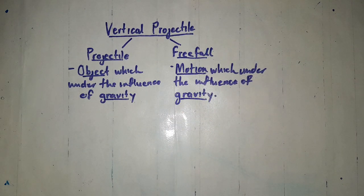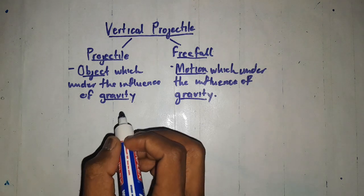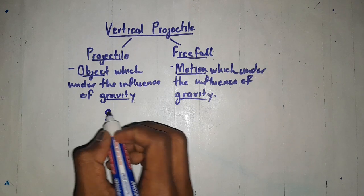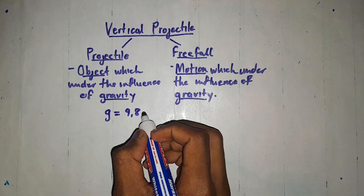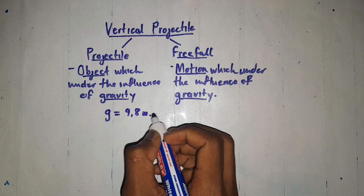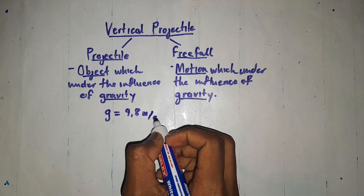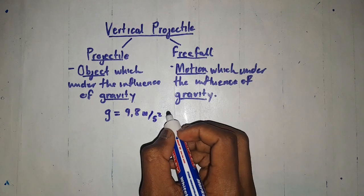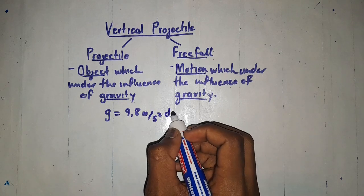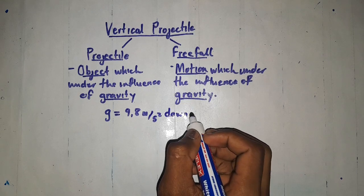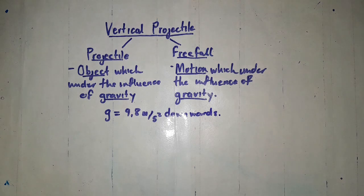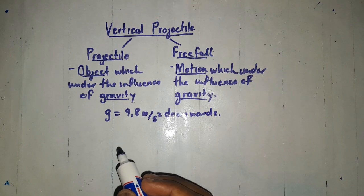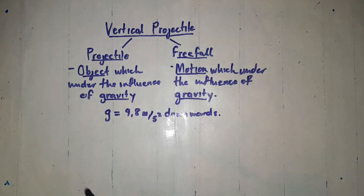Bear in mind that the gravitational acceleration is always given by g = 9.8 meters per second squared. It always acts downward. This is the value of gravitational acceleration.